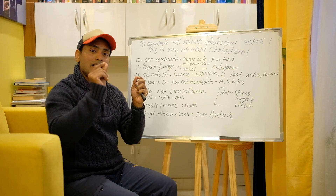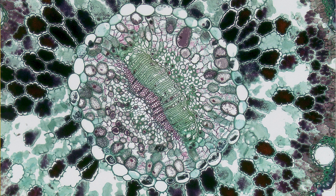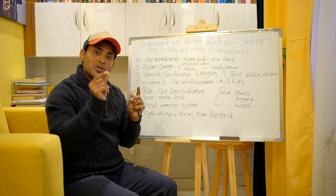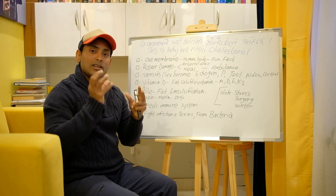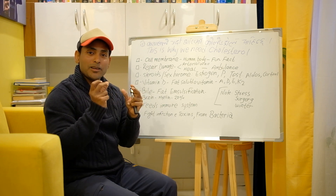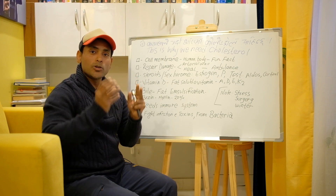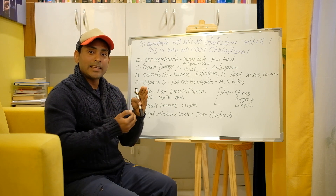We have 30 trillion cells in our body, and in every cell membrane we have cholesterol. So we have 20% of cholesterol in the cell membrane. Human life cannot exist without cholesterol. What does the cell membrane do? The cells use cholesterol to regulate electrolytes and maintain membrane integrity.